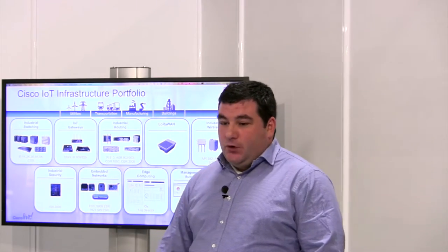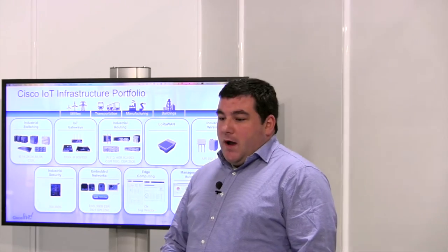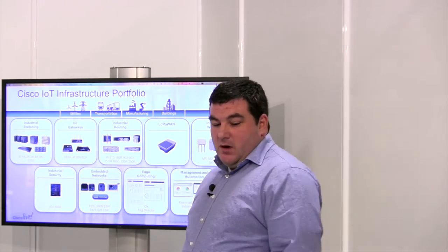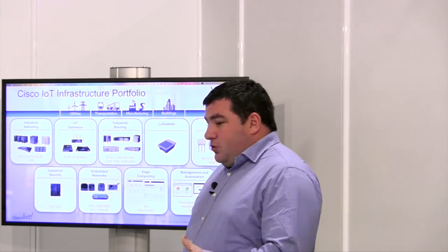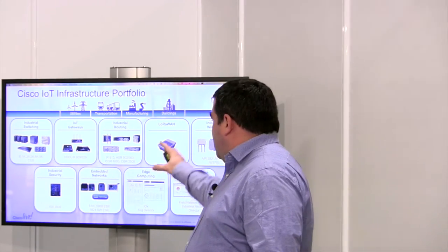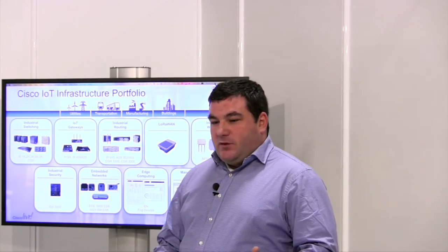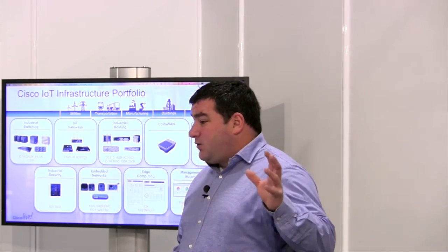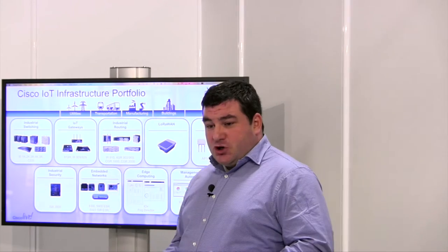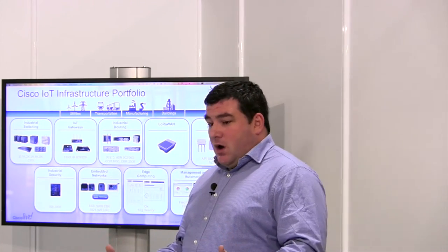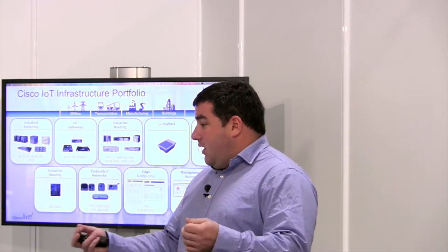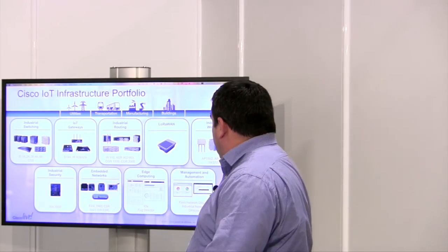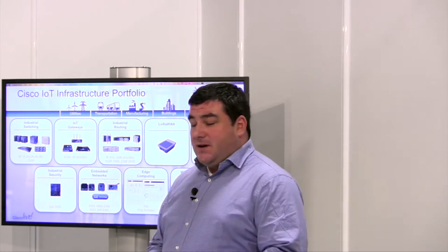We have an IoT gateway portfolio — what we call IoT gateways are really our M2M routing platforms. We have one right here, the IR 809, which I'll use for the demo. We have industrial routing products really meant for utility routing. One iconic product is the CGR, a pole-mount router that is part of a mesh solution — for example in utility, for AMI use cases to measure electric meters and pass data through a mesh network. We have a LoRaWAN solution, a new product and new technology, really for low-power sensor networking.